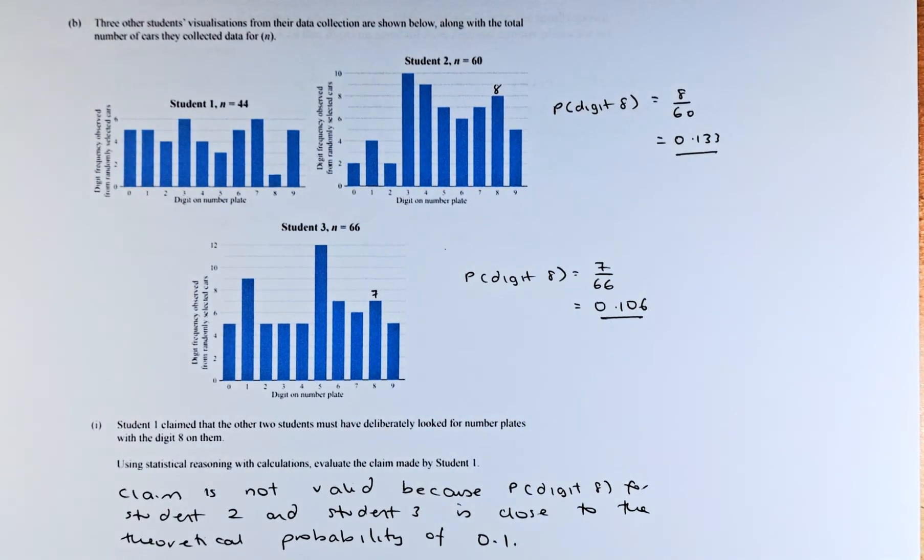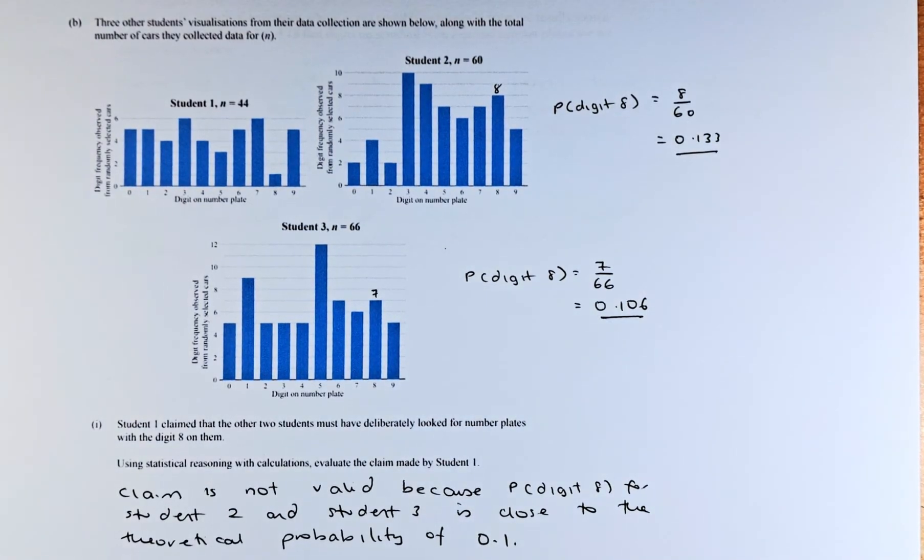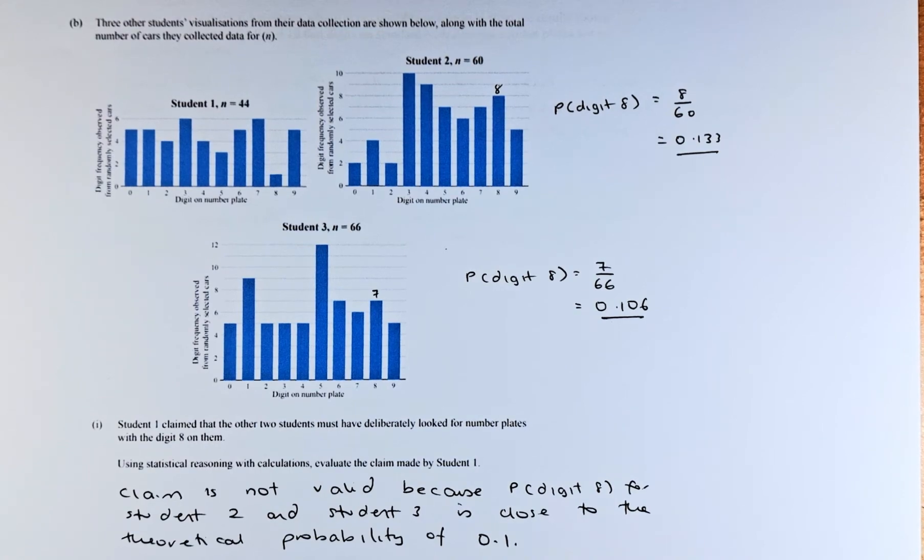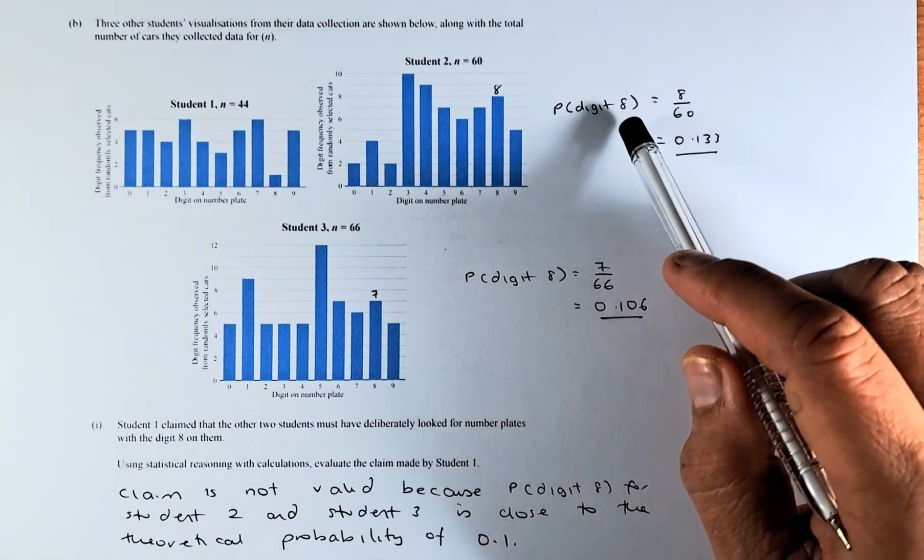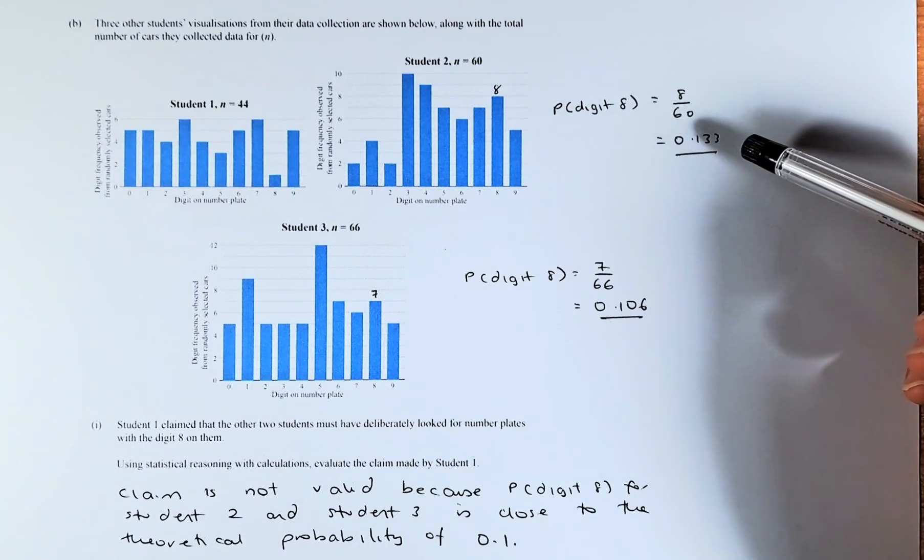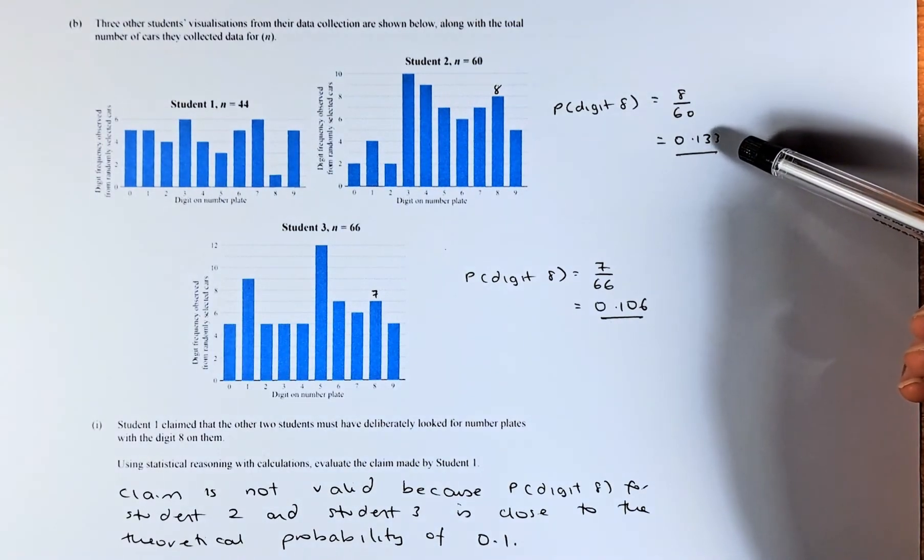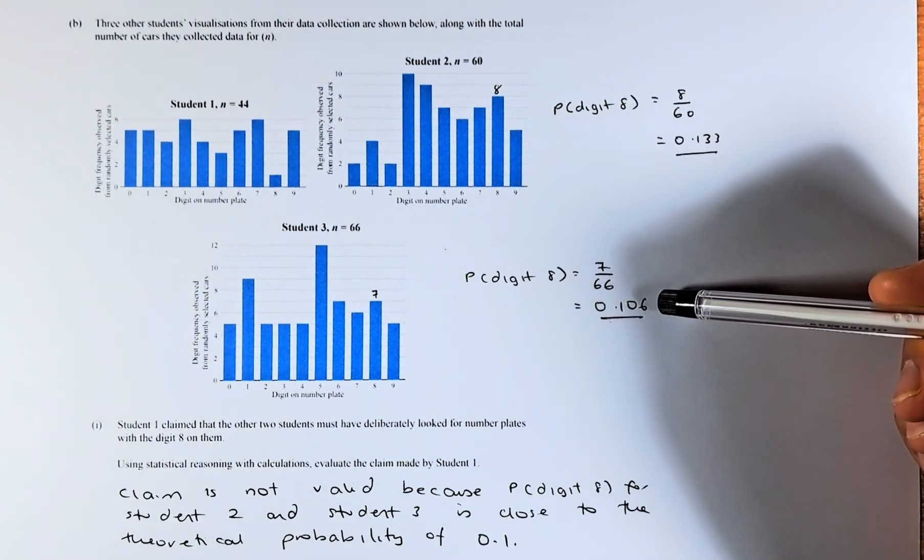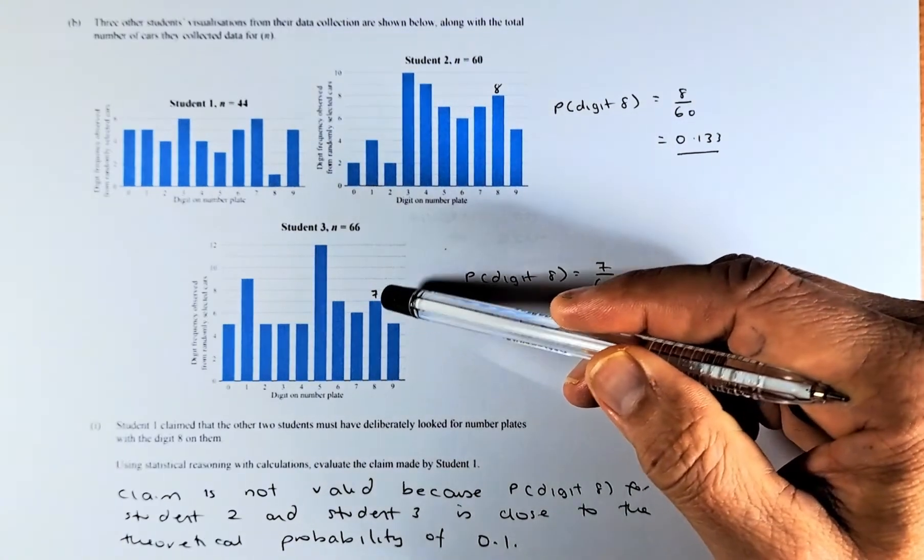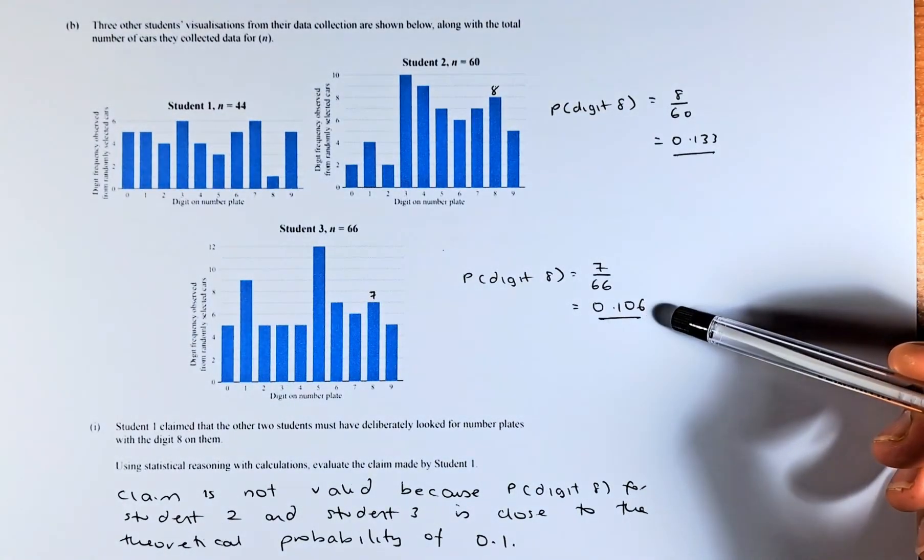So using statistical reasoning with calculation, evaluate the claim made by Student 1. So the probability of getting digit 8 for Student 2 will be 8 out of 60. It's going to be 0.133. Probability of Student 3 getting digit 8 is going to be 7 out of 66. So it's 0.106.